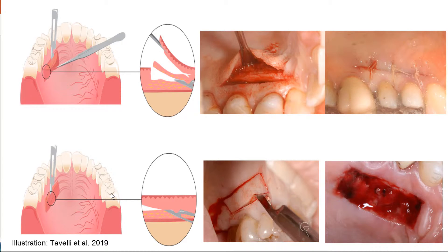In the epithelialized gingival graft technique, the epithelium and the underlying connective tissue of the top is removed, leaving behind all the fat tissue. In this case, the epithelium has to be removed outside the mouth. You have to remove both epithelium and connective tissue and work this epithelium outside the mouth, leaving an open wound in the patient for the post-operative process.